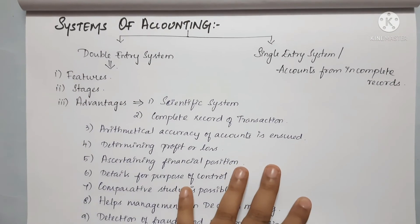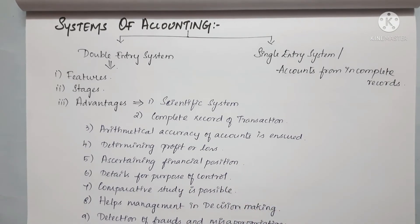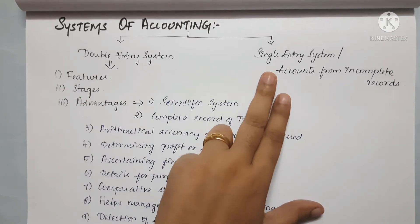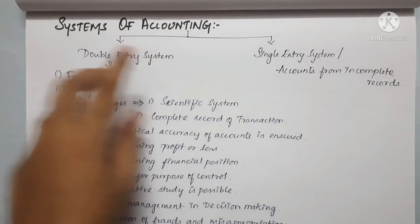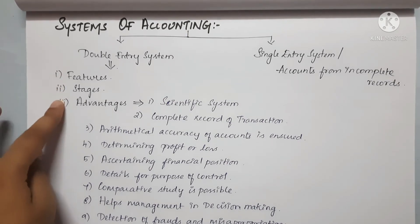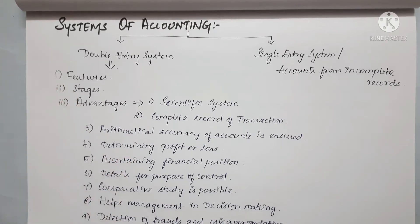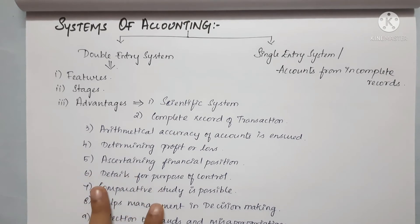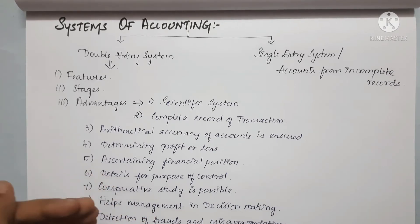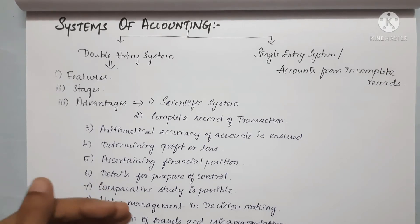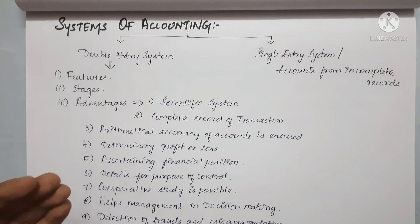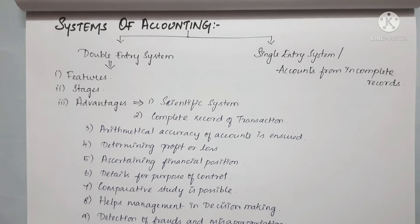Now we will discuss the Double Entry System and the Single Entry System — also known as Accounts from Incomplete Records. The Double Entry System requires all transactions to be recorded with both a receiving and giving aspect — Debit and Credit. For example, if you are receiving an asset, you will also give out cash in return.